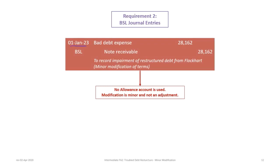The journal entry on the restructure date, January 1st, 2023, for BSL is: debit bad debt expense $28,162 and credit the carrying value of the note receivable by $28,162. This records the impairment of the restructured debt from Flockhart under minor modification of terms.